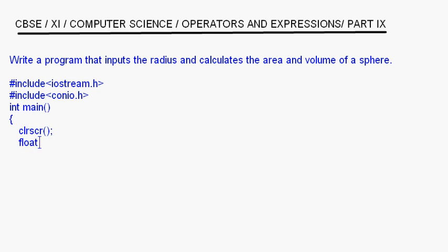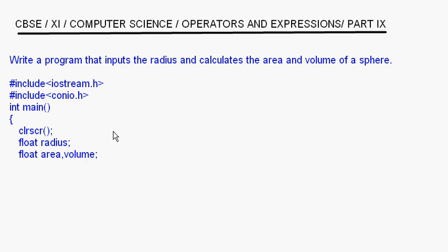Now we take the variables. First I take float radius, and then in the same line we could have written float area, comma volume. All three are taken as float because the calculations can give results in decimals.